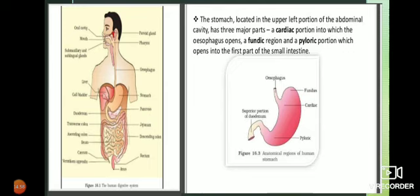An important point: when we take food in, it must go through the food pipe and not the wind pipe. On top of the wind pipe, there is a flap-like structure known as the epiglottis. The epiglottis ensures that food does not go into the wind pipe from the food pipe.